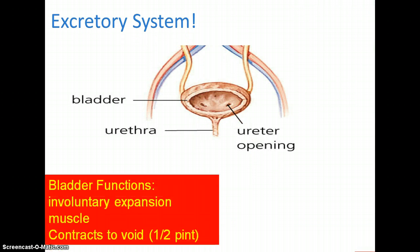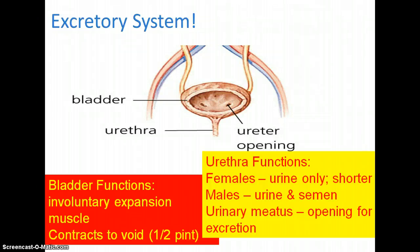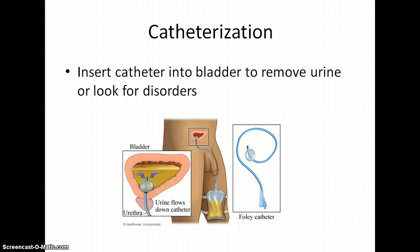If we zoom in on just the bladder and the urethra — the bladder is an involuntary muscle and it can hold about a half a pint of liquid waste, but it's pretty muscular so we can get it to stretch if need be. The urethra in males carries urine and semen for reproduction; in females it only carries urine and it's much shorter. The opening that urine is excreted through from the urethra is called the urinary meatus — a meatus is just a round circular opening. We can also do the work of the urethra artificially through something called catheterization, where a tube is inserted through the urethra all the way into the bladder, where it stays and pumps out the urine as necessary.